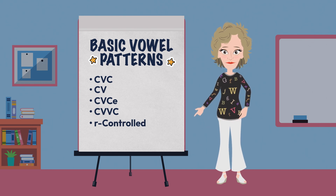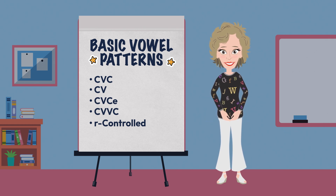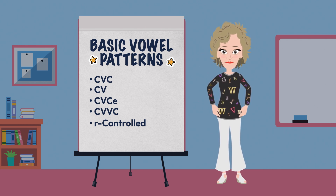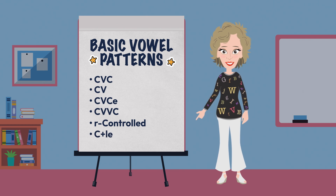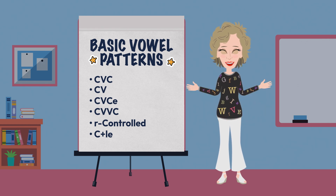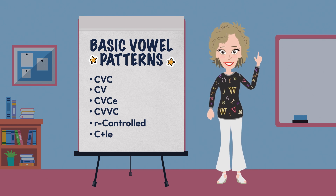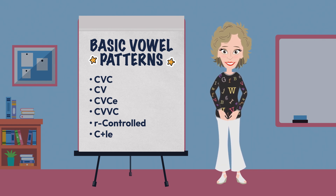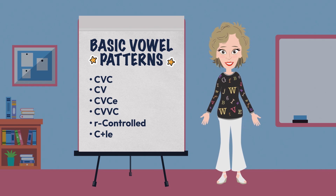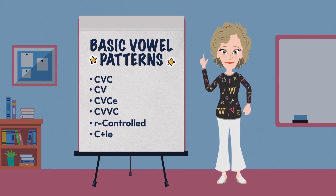The fifth vowel pattern is the R-controlled pattern, where the vowel is followed by the letter R, which kind of takes over the vowel sound as it affects the airflow. At the primary level we generally deal with the basic three R-controlled vowels. The last vowel pattern, the C-plus-LE pattern, is generally taught later — around third grade — and only occurs in two-syllable words. It is important to teach students to look at the vowels and where they are placed before decoding, as placement will help them in that process.